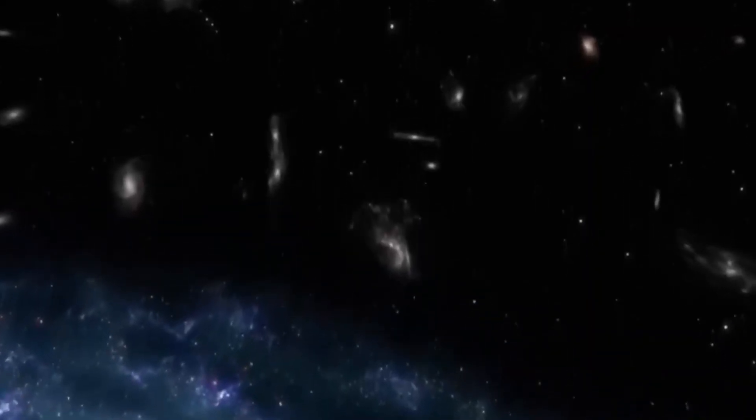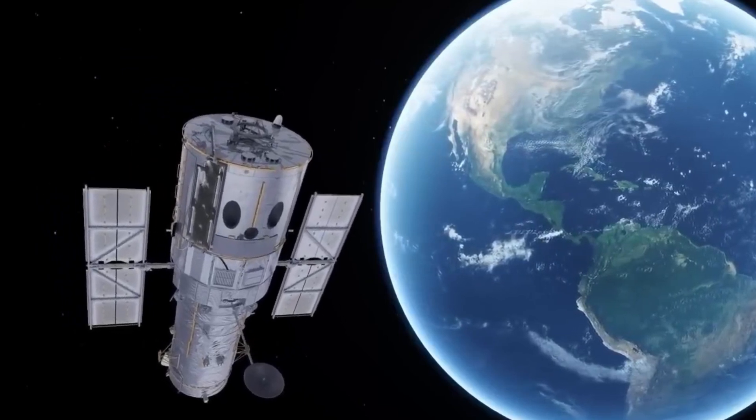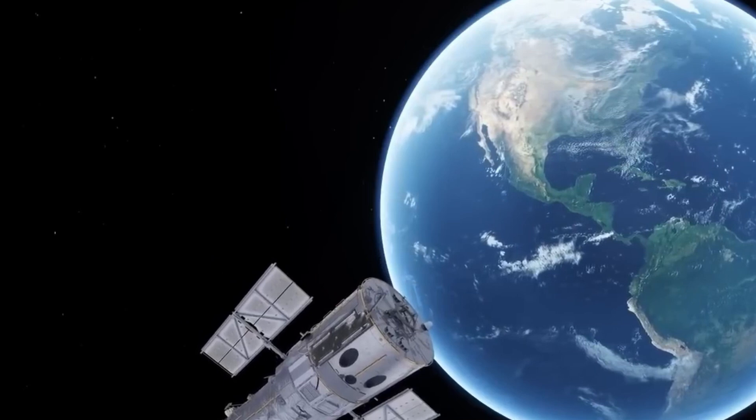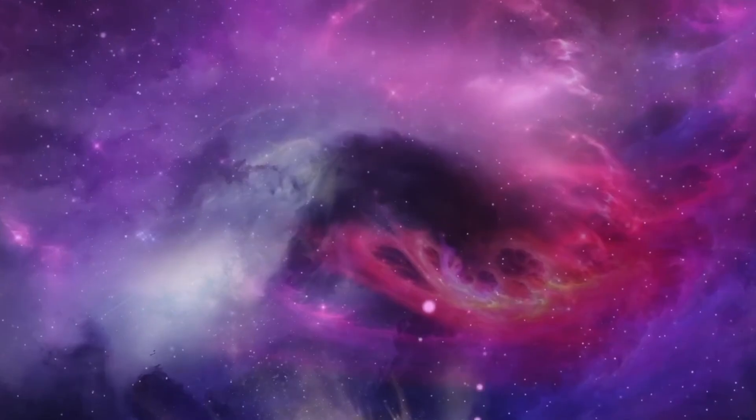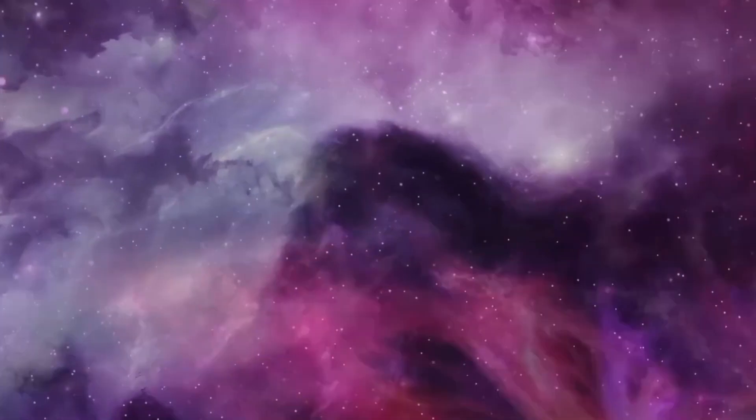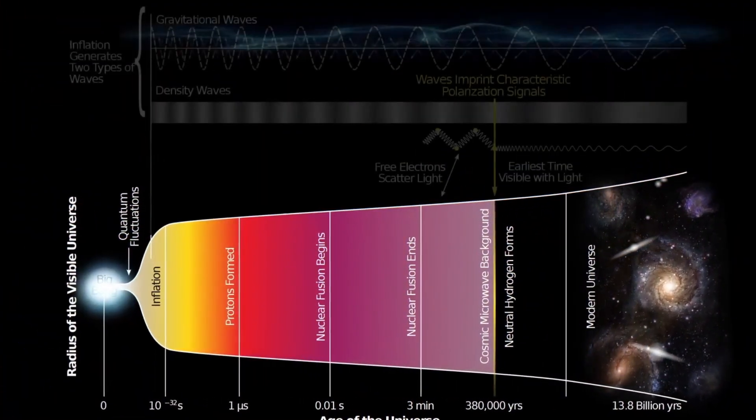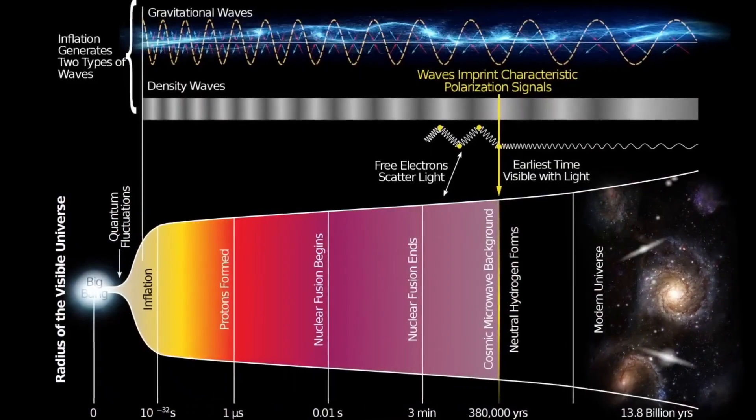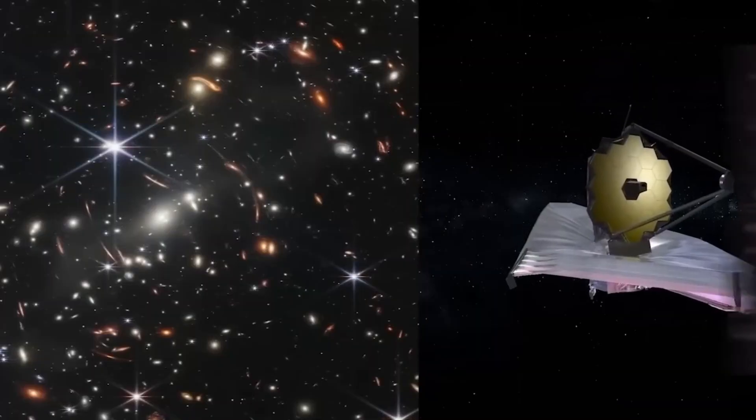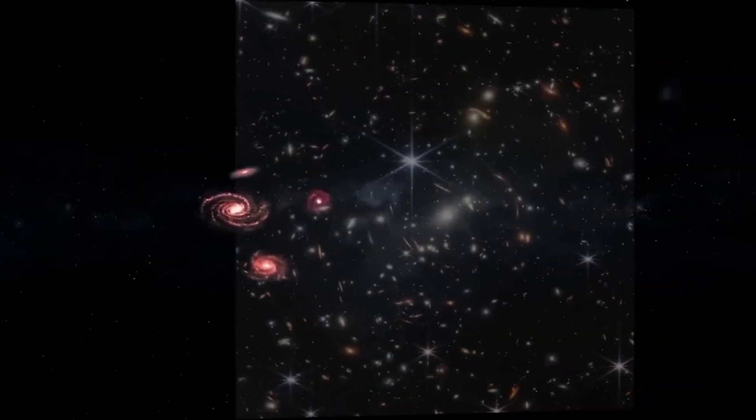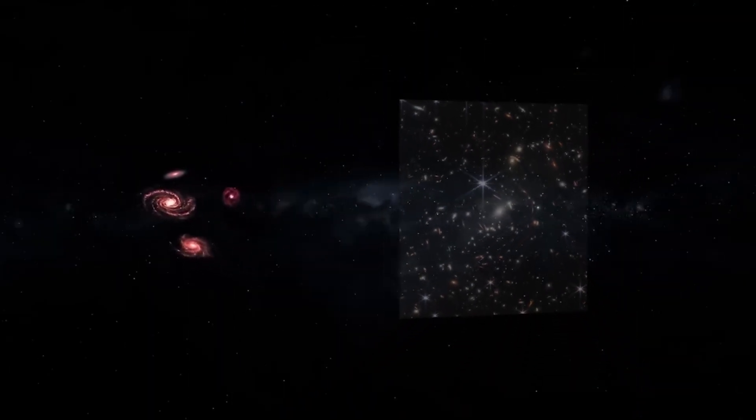The most distant objects in the universe are 47 billion light-years away, making the size of the observable universe 94 billion light-years across. If you are wondering how the observable universe can be larger than the time it takes light to travel over the age of the universe, the answer is because the universe has been expanding during this time, and this causes very distant objects to be further away from us than their light travel time. Most scientists think the entirety of the universe extends way beyond the observable universe.